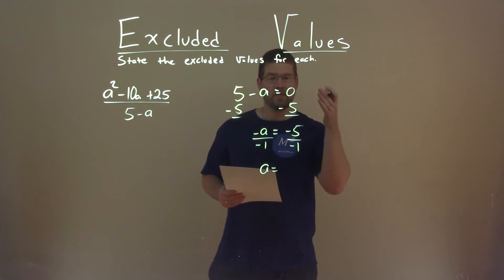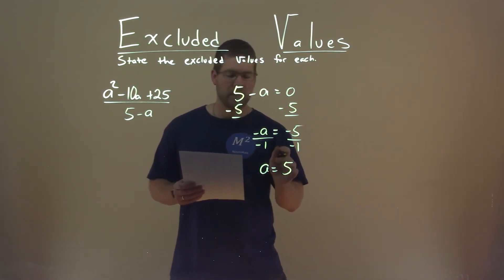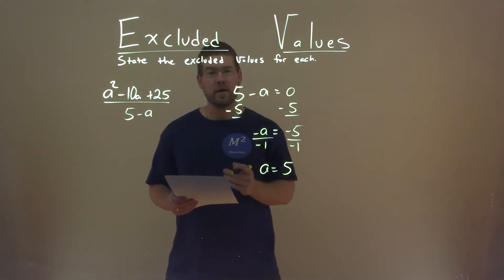Negative 5 divided by negative 1 is positive 5, and so positive 5 is our excluded value.